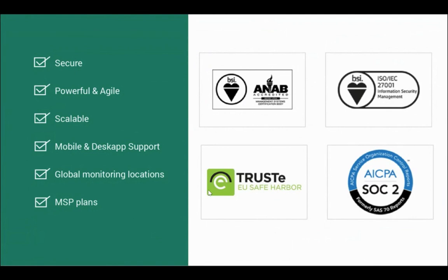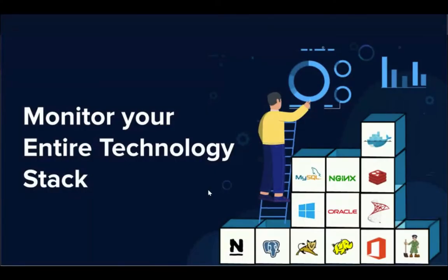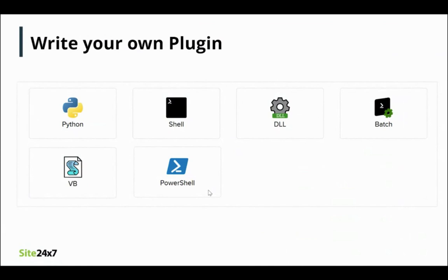Monitoring websites, servers, and applications are critical, but an IT environment has more components that are equally important. Site 24-7 is not only an all-in-one monitoring tool but a comprehensive solution. For example, the Tomcat plugin is a ready-to-install integration that monitors the performance, availability, and usage stats of Tomcat servers. We provide 100-plus plugin integrations to monitor databases, web caches, message brokers, big data applications, and more. Can't find the one you're looking for? Build your own plugin using Python, Shell, Batch, PowerShell, VB, or DLL for Windows and Linux platforms.